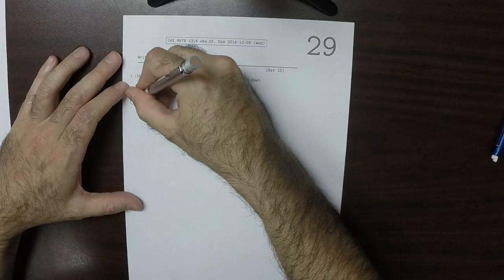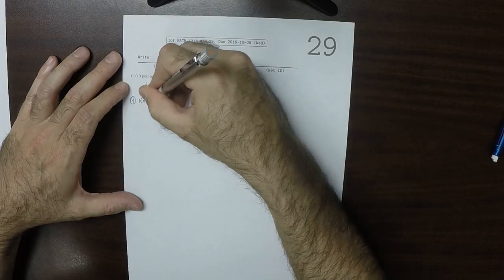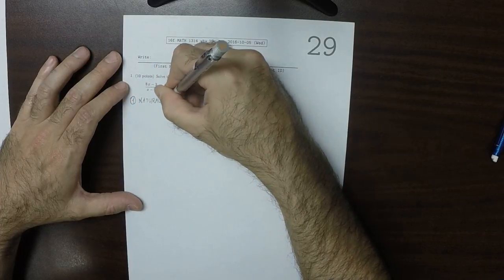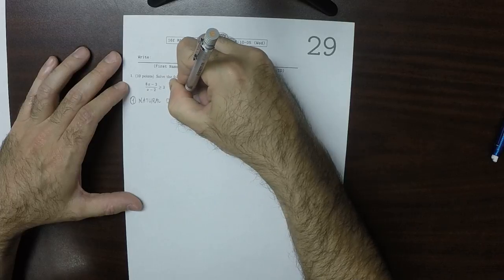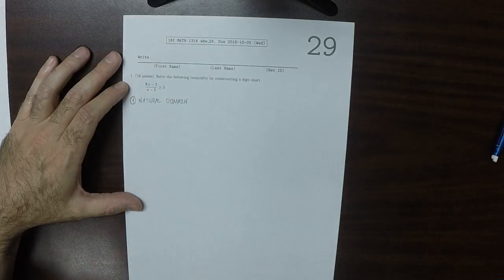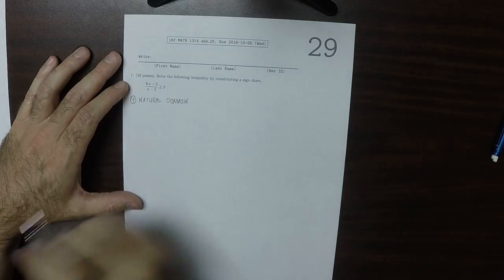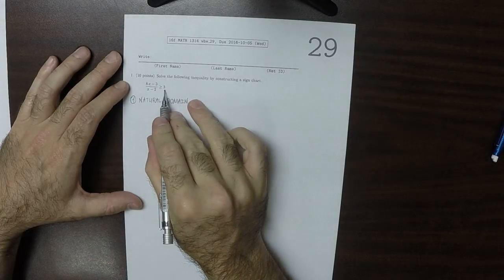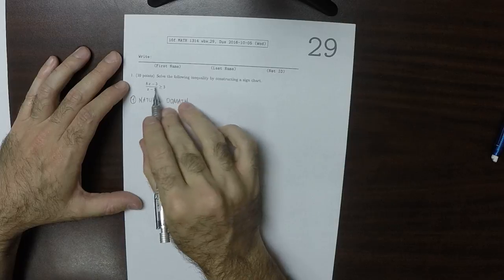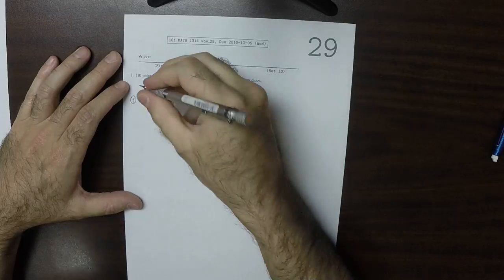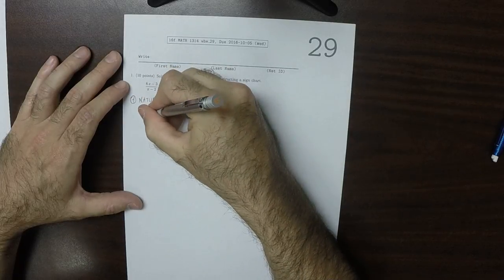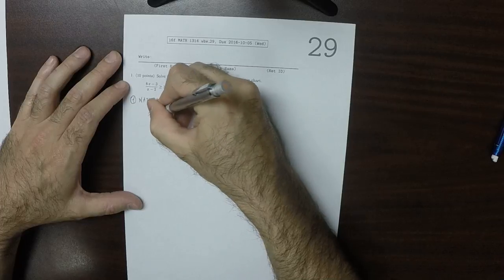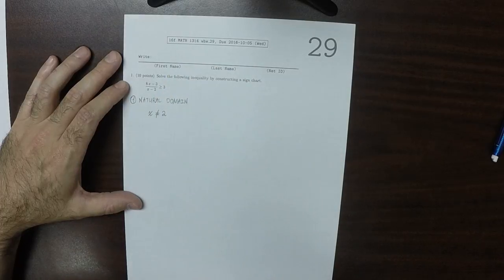So first step is to consider the natural domain. The right-hand side, there's nothing wrong with the right-hand side. Three can be evaluated anywhere. But the left-hand side cannot be evaluated at 2. So the natural domain is anything except 2.